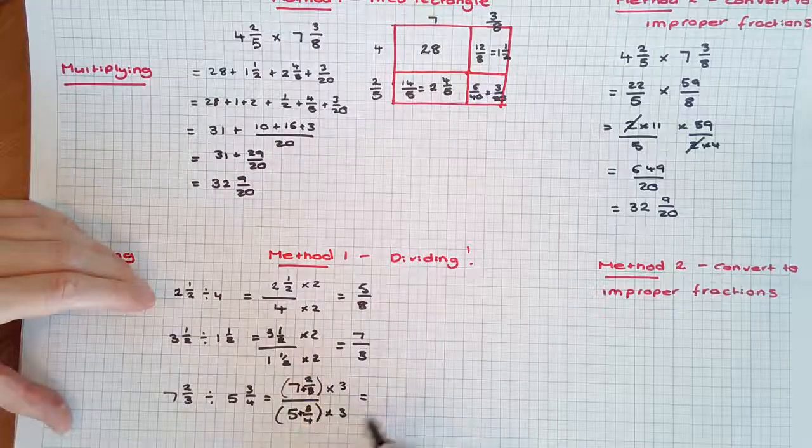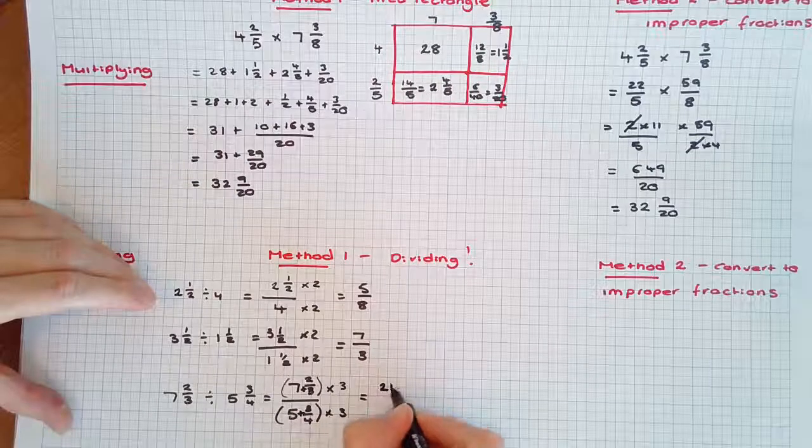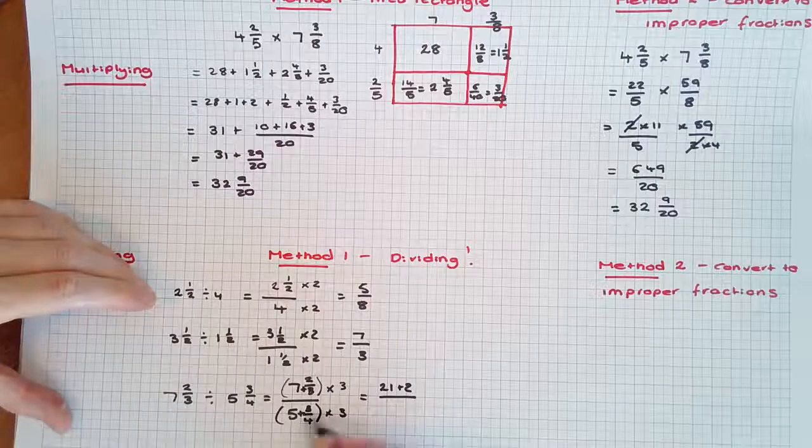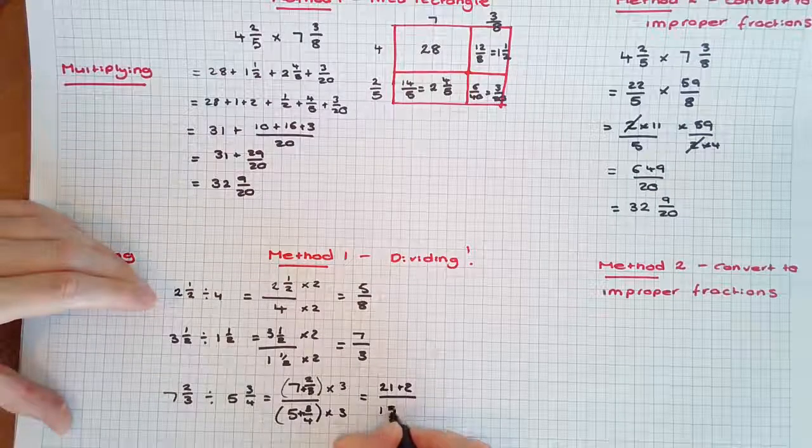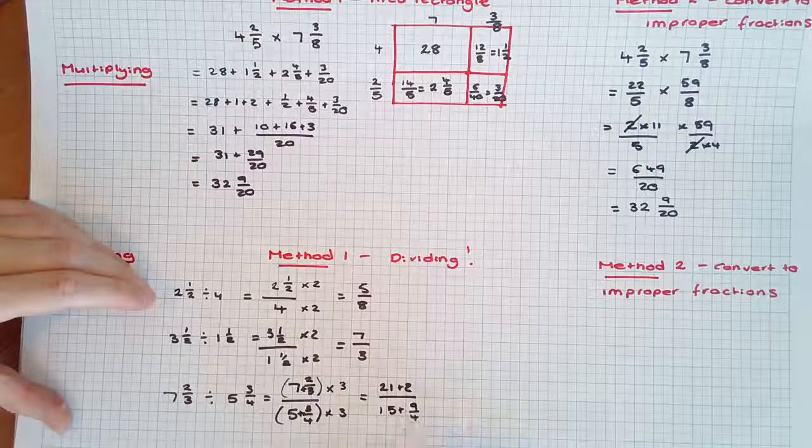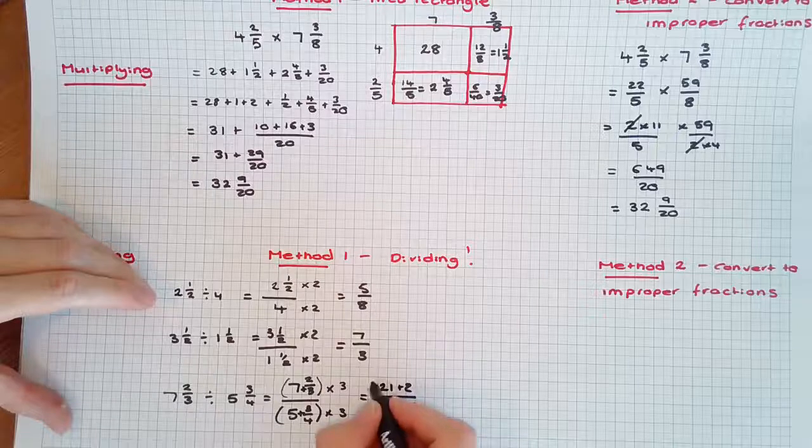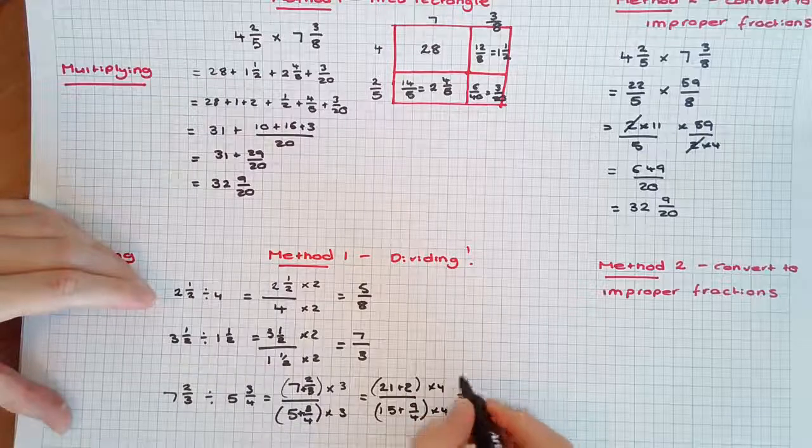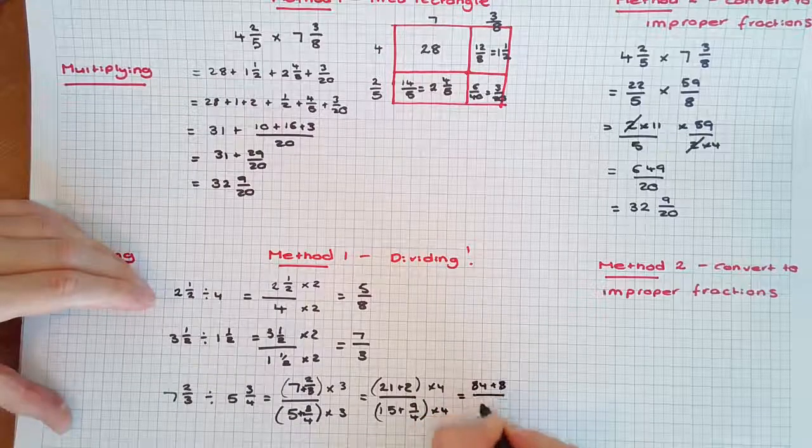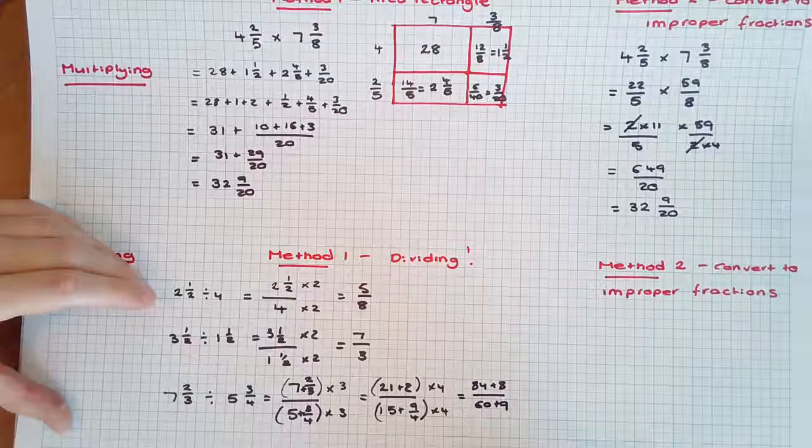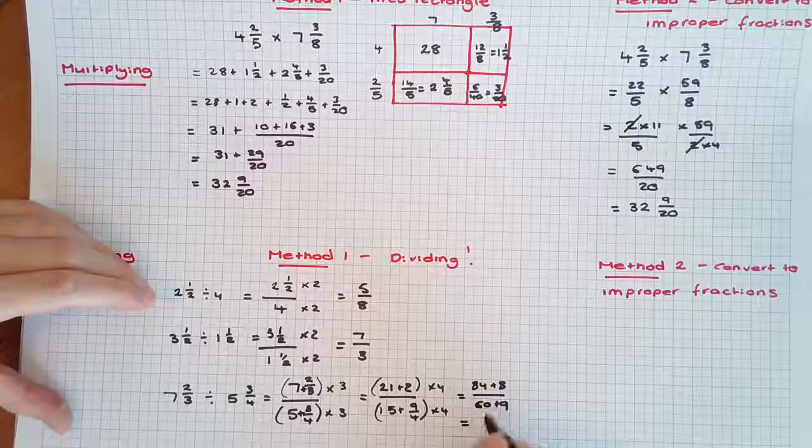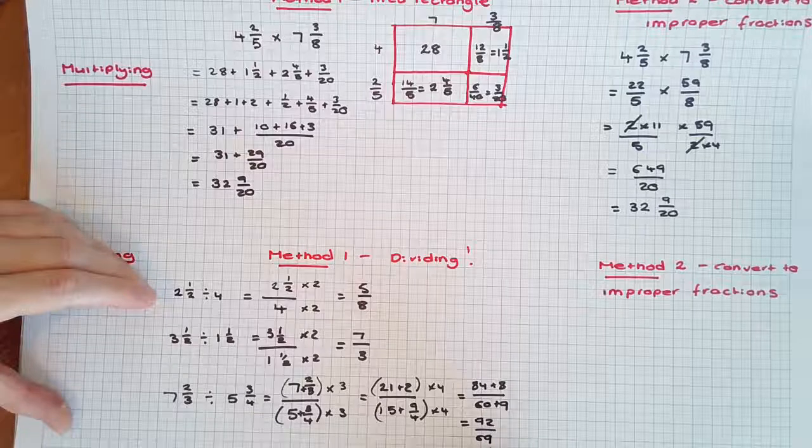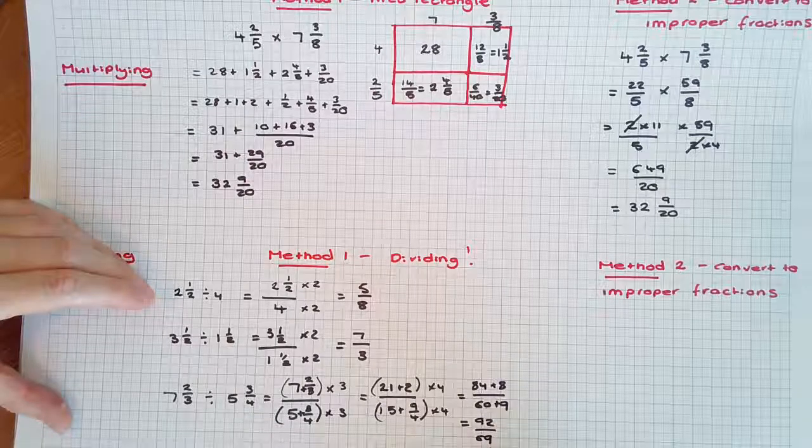Using the distributive law, we have 15 plus 9/4. Now we're still left with a fraction in the denominator over 4, so we're going to multiply the numerator by 4 and the denominator by 4. So we end up with 84 plus 8 over 60 plus 9. Now this is getting into some tricky stuff. To simplify this, we've got 92 over 69, which would then finally simplify to 1 1/3. You can see, the trickier they are, the harder they become using this method, but the simpler ones are quite quick.